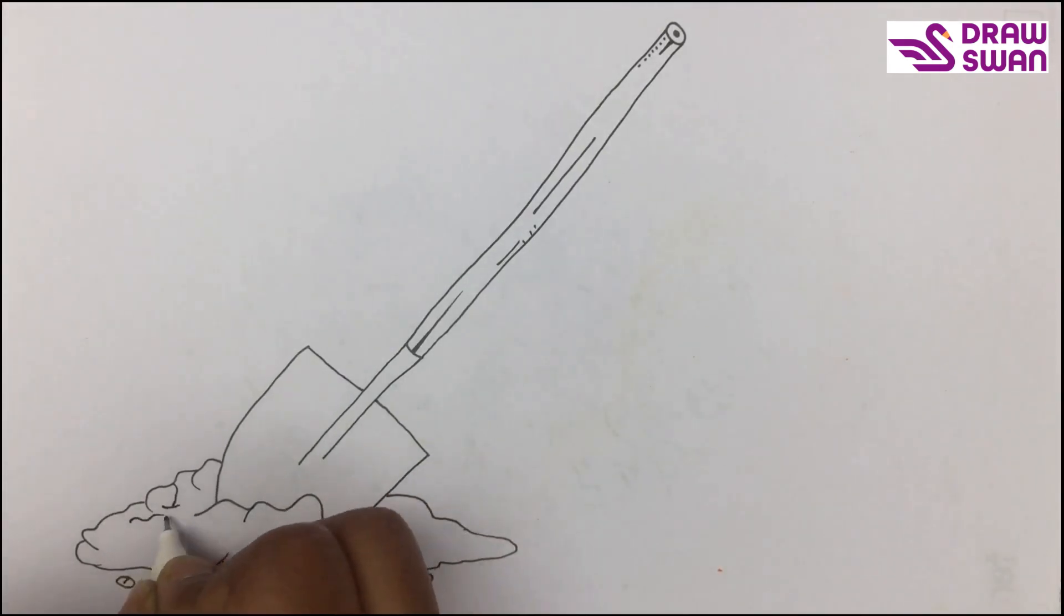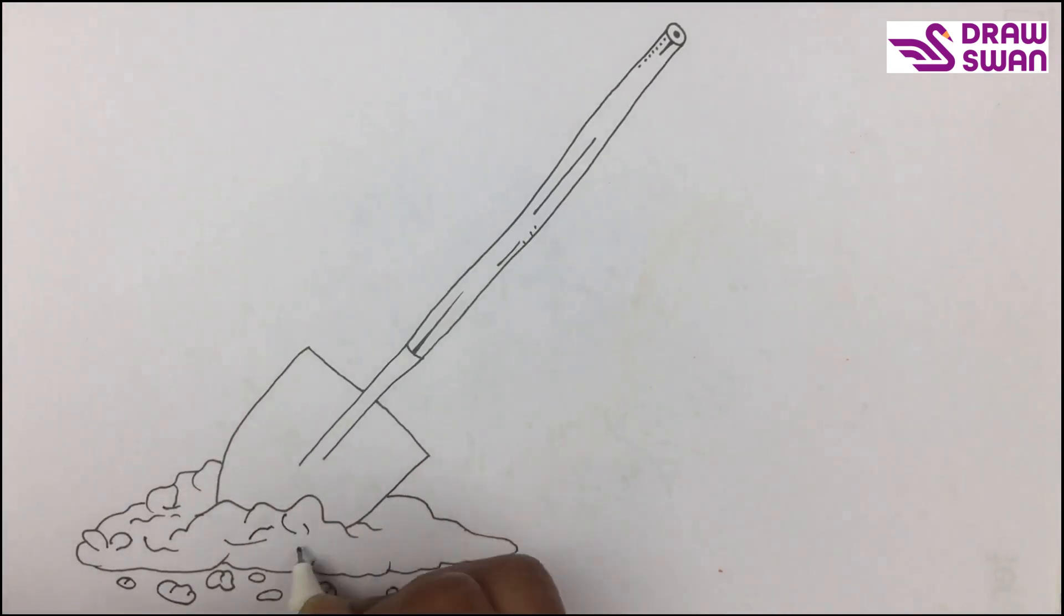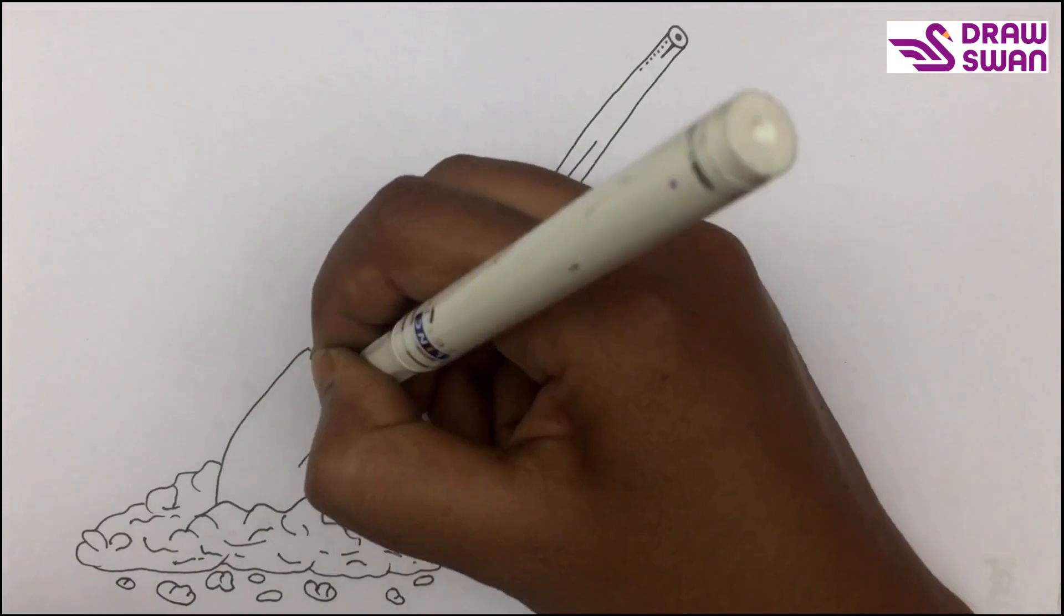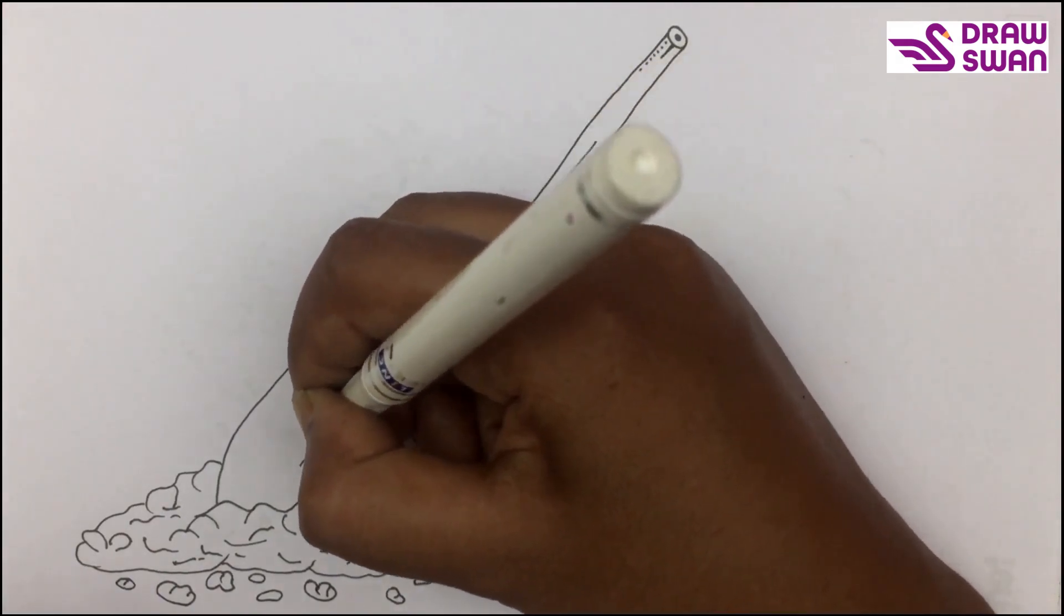Adding some texture so that it looks realistic. Also I'm adding some texture to this spade.